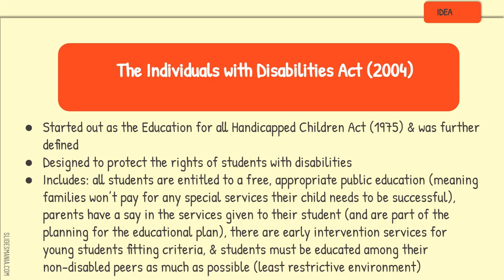There are also early intervention services for young students who fit the criteria — a special pre-K program where students can come to school early and begin receiving special services before they officially start school. Students must be educated with their non-disabled peers as much as possible, which is called their least restrictive environment. Special services can sometimes be delivered within the regular classroom, and sometimes students are pulled out briefly, but the overall goal is for them to be among their age-related peers as much as possible.